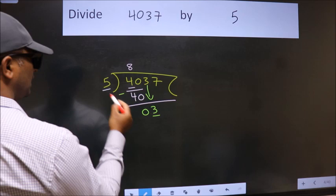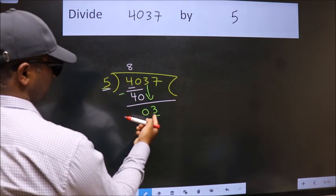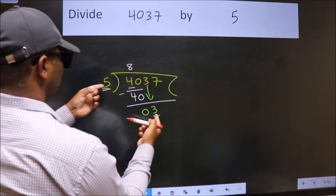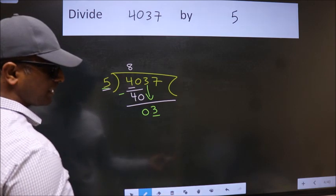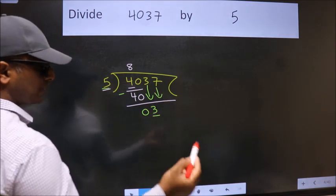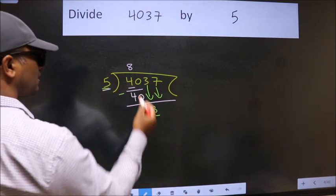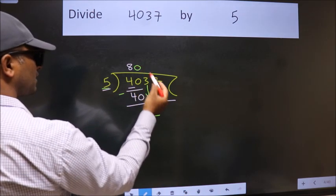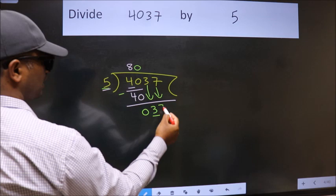Now, here we have 3, here 5. 3 is smaller than 5. So, we should bring down the second number. And the rule to bring down the second number is put 0 here. Then only we can bring this number down.